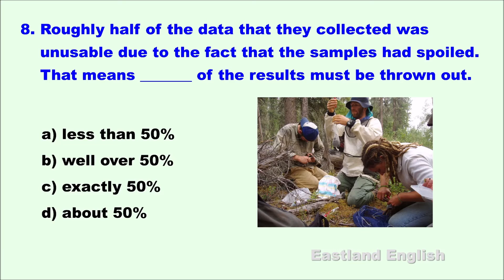The most obvious keyword is half — all of the answers have 50 percent in them, meaning one half exactly. Had spoiled equals got rotten or went bad. When something has gone bad, you cannot use it anymore — it makes sense to throw it out. The most important word before half is roughly. Less than 50 percent means 49 percent or less. Well over 50 percent would likely be 70 percent or higher. Exactly 50 percent means not less than and not more than 50 percent. But roughly means not exactly, or about. Number eight: Roughly half of the data was unusable — that means about 50 percent of the results must be thrown out.